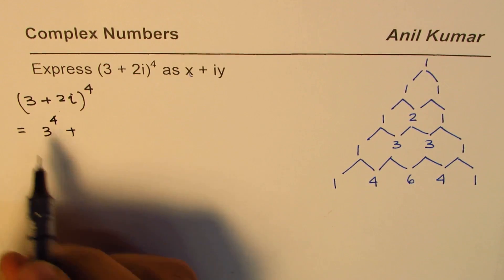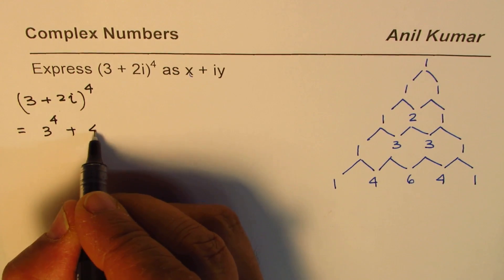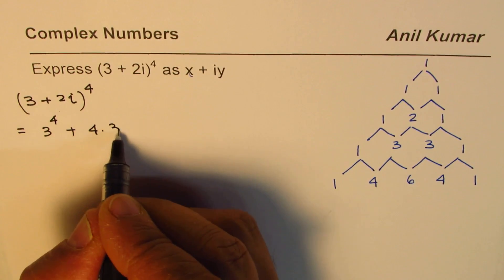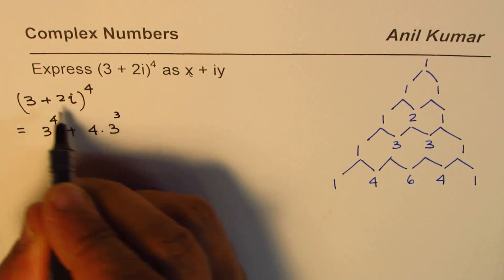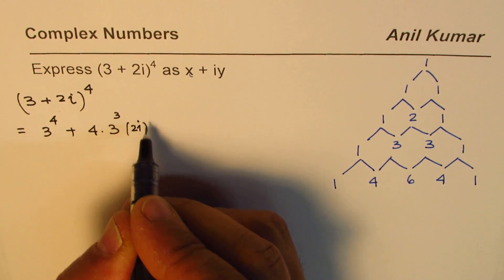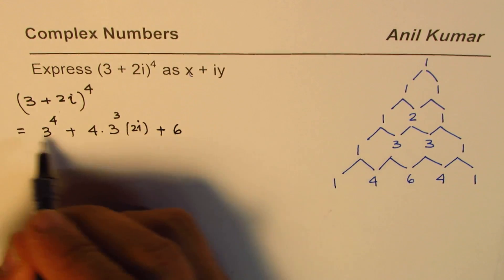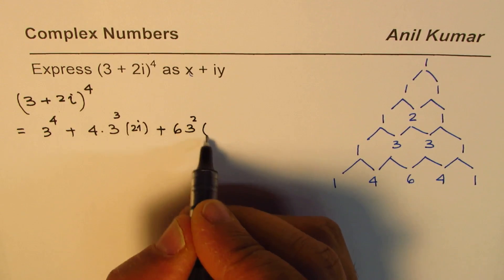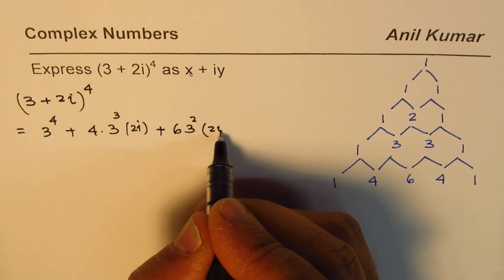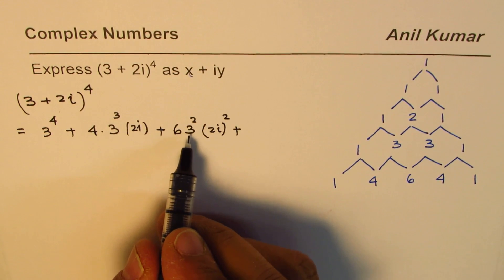Plus next time the coefficient has to be 4, so we'll write 4 times 3 to the power of one less than 4, and the second term which is 2i for us will have power of 1. Now plus 6 will give us 3 square and square of 2i.